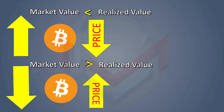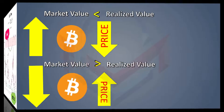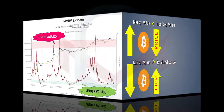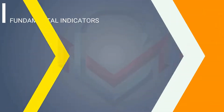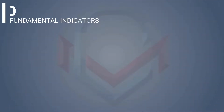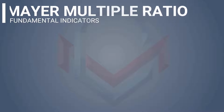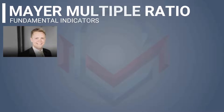You can add a pink shade and a green shade to the chart. Based on these shades, we can say whether Bitcoin is overvalued or undervalued. The third indicator is the Mayer Multiple Ratio.